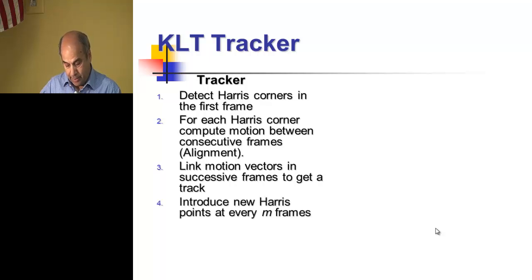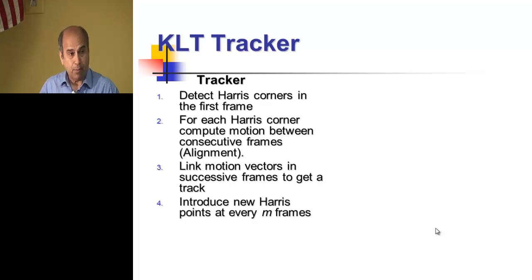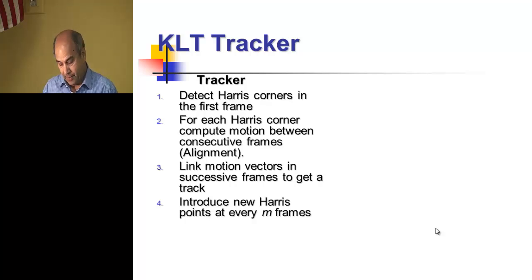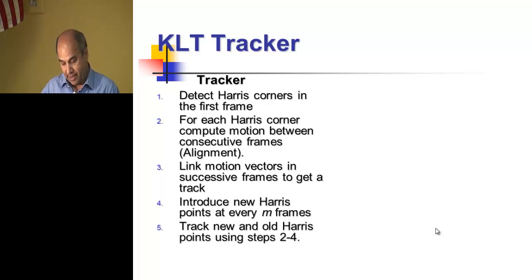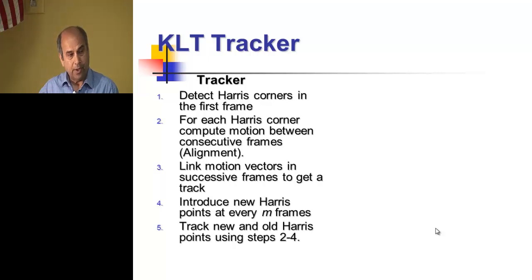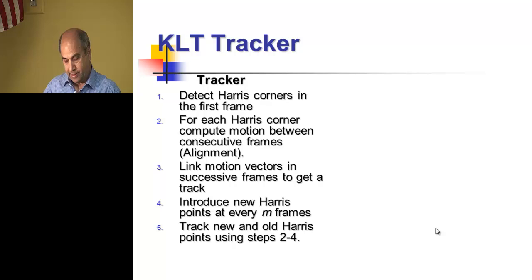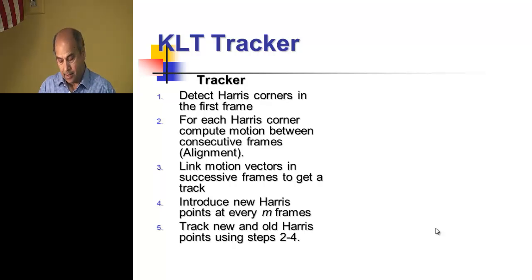Linking positions gives you a track. You can continue tracking corners, introduce new corners after a few frames, detect more corners, and keep tracking these using the steps for both old and new corners. That's the simple KLT tracker algorithm.